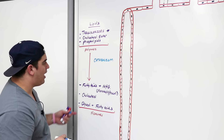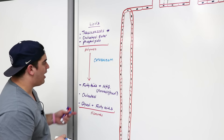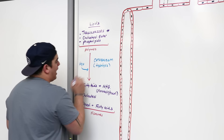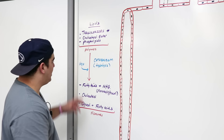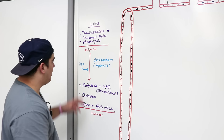Generally, whenever we break down these substances, we do it through a mechanism referred to as hydrolysis — meaning we add water into the actual reaction to break specific types of bonds. The bonds we're going to frequently break in this video are called ester bonds.